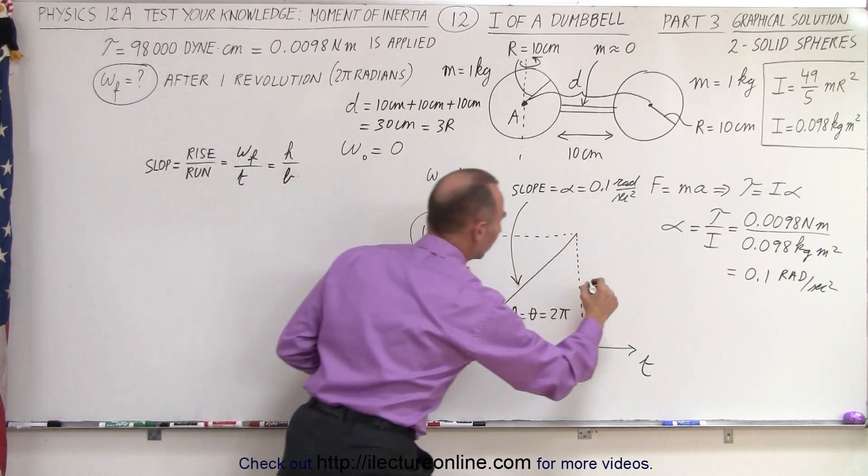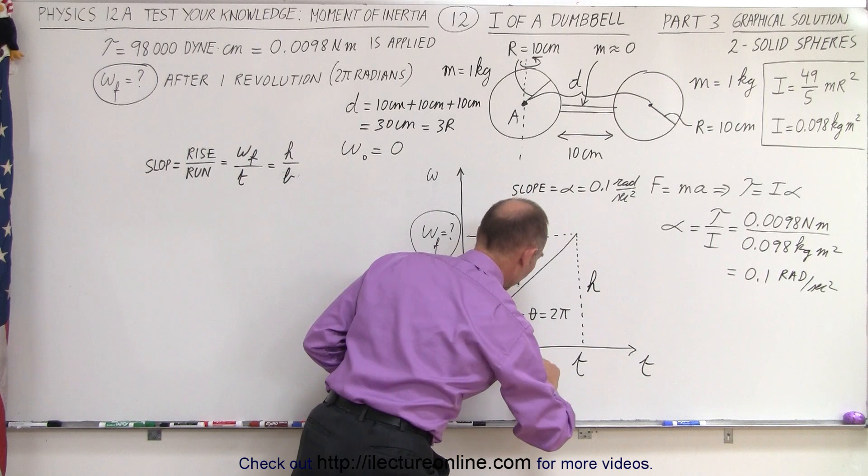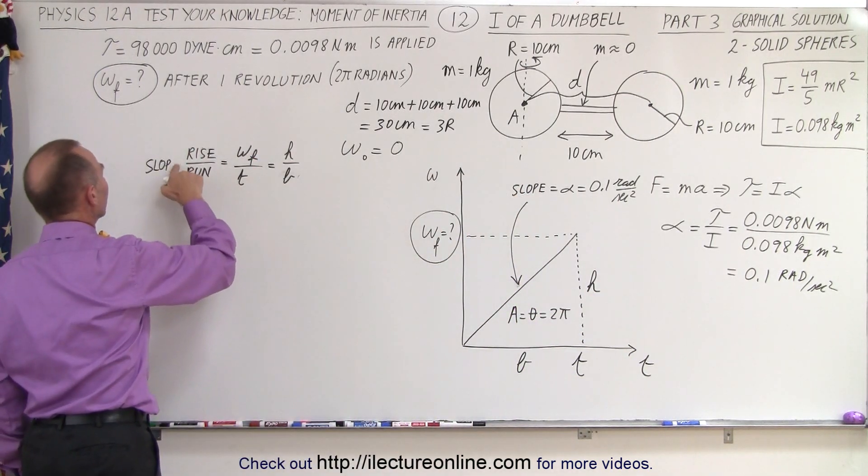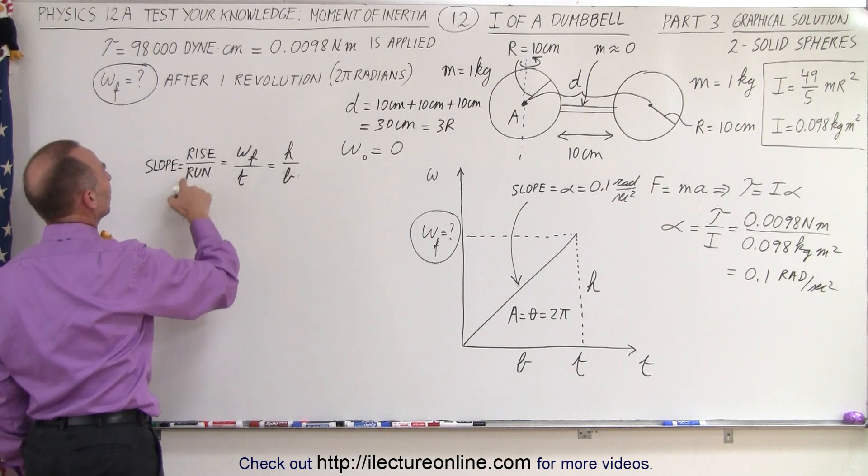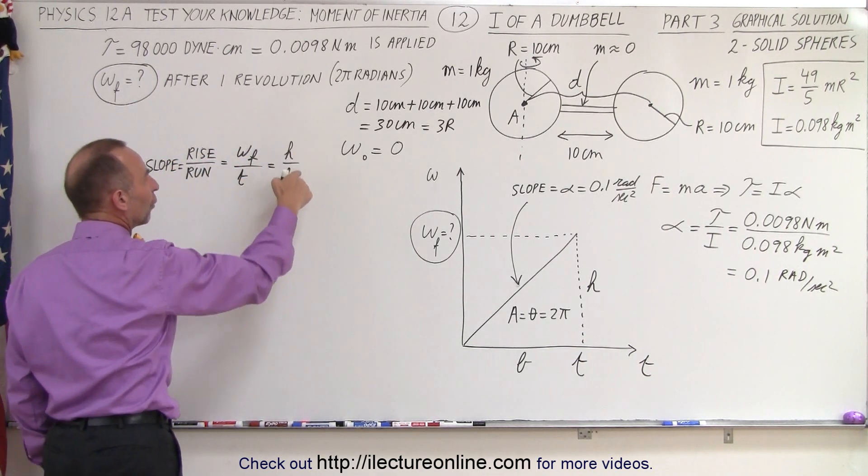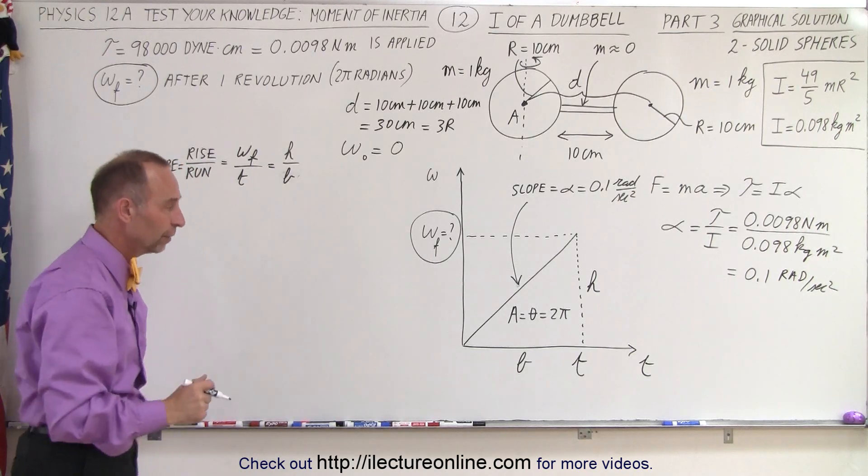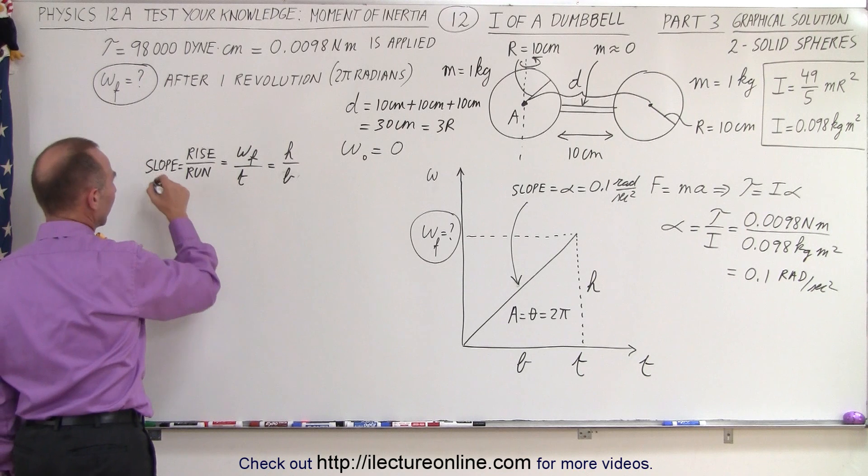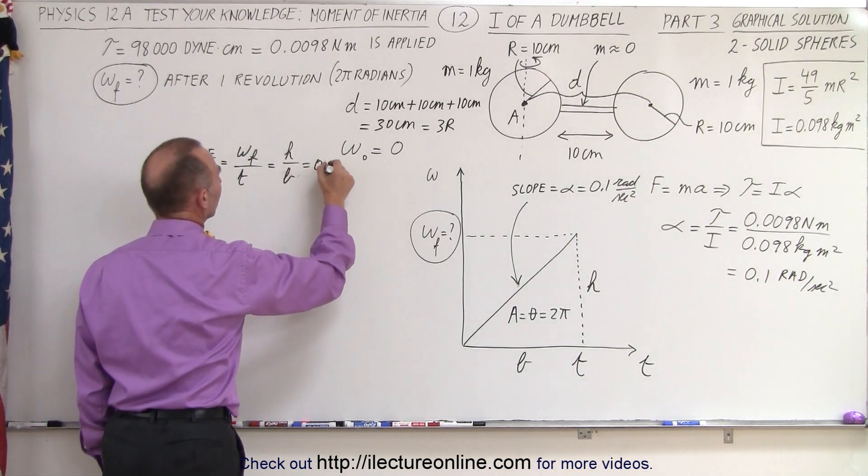So, notice that we have the height here, and we have the base of the triangle. By definition, we can say that the slope is equal to the rise over the run, which is omega final over time, or the height over the base of the triangle. And that's equal to 0.1.